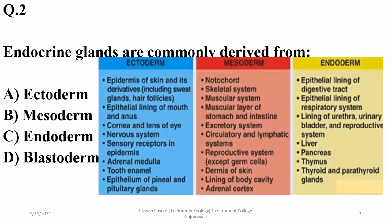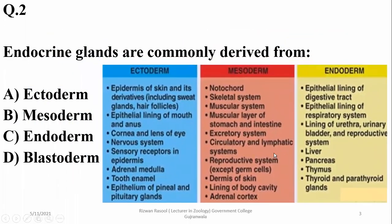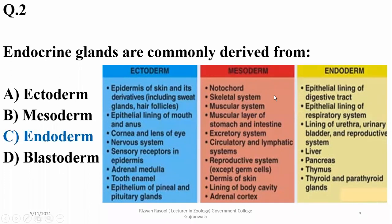Endocrine glands are commonly derived from endoderm, but some glands such as the adrenal medulla are derived from ectoderm. The adrenal cortex and other steroid hormone-secreting glands are produced by mesoderm. Most glands such as the pancreas, thymus, thyroid, and parathyroid are derived from endoderm. So the right option is C.